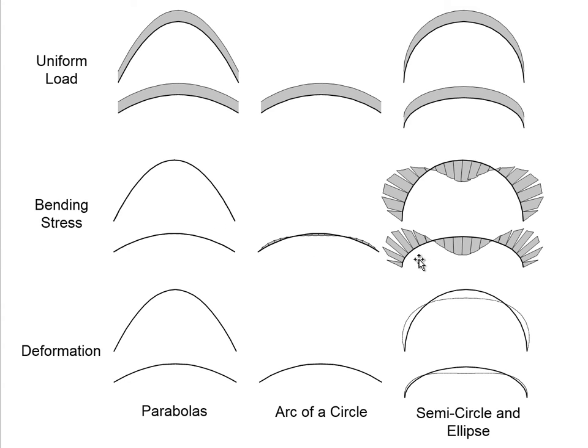In the second diagram we see the bending stresses that are associated with each of those shapes. You see essentially no bending stress for the parabolas because the parabolas are the ideal funicular shape under this load that is uniform as projected on the horizontal. In the case of the arc of a circle, we see a slight tendency to sag inward on the top and to bulge out at the quarter points because it's slightly flatter on the top than the parabola and slightly more rounded at the quarter points.